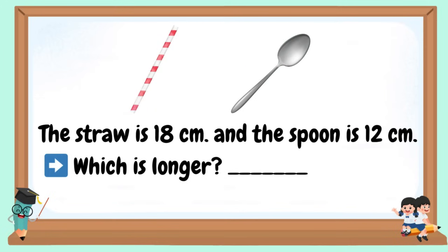The straw is 18 cm and the spoon is 12 cm. Which is longer?